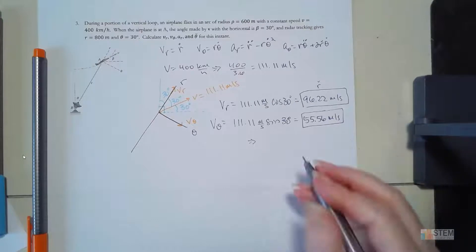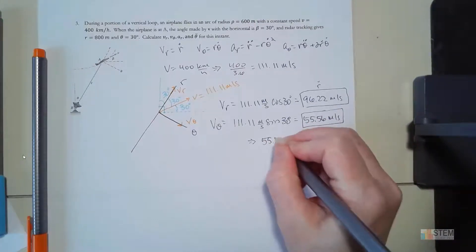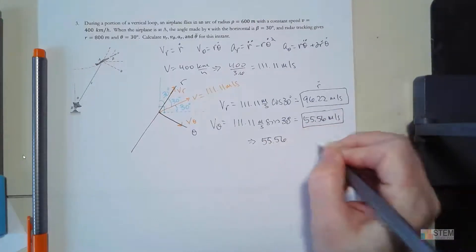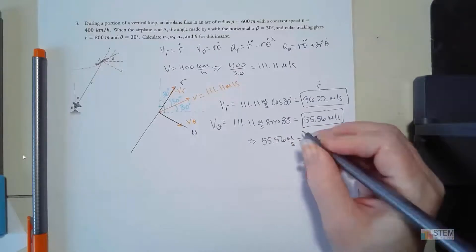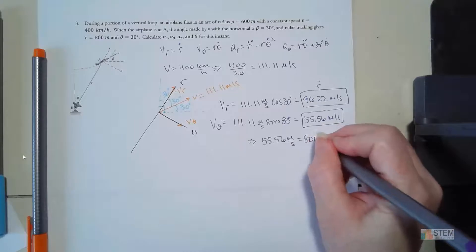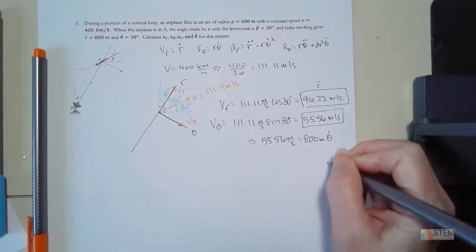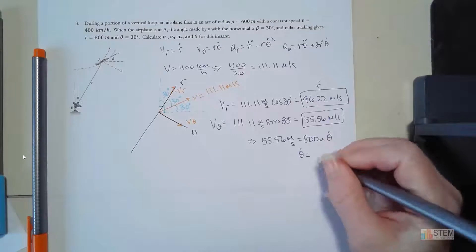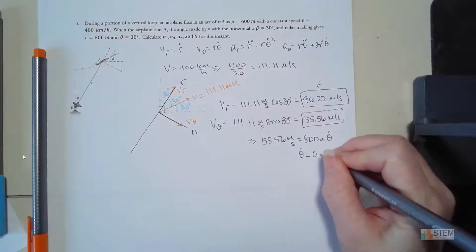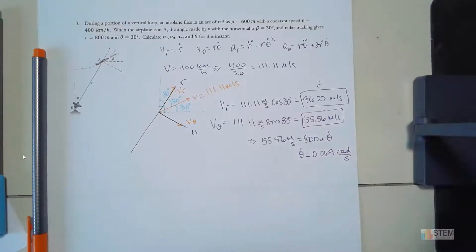Remember that vθ also equals r·θ̇, so we can get θ̇ from this. Setting 55.56 equal to r·θ̇ with r = 800, we get θ̇ = 0.069 radians per second. We'll hold onto that in case we need it.